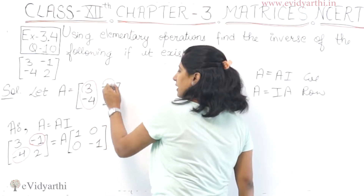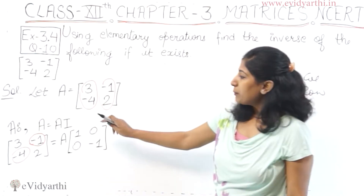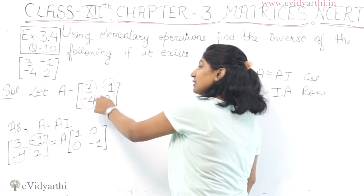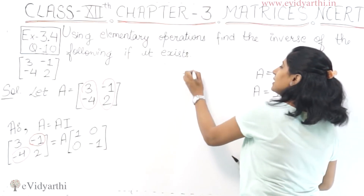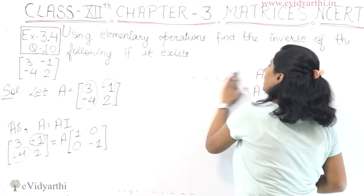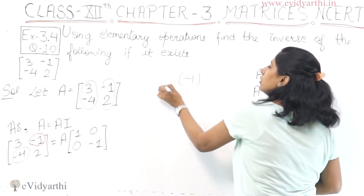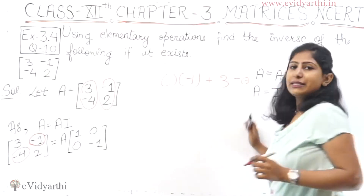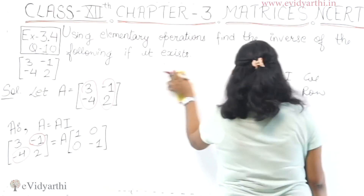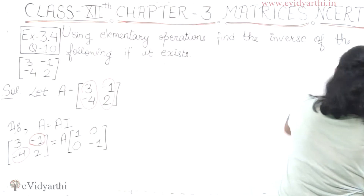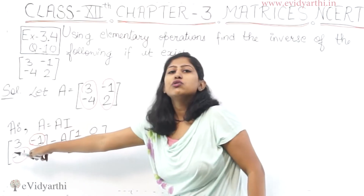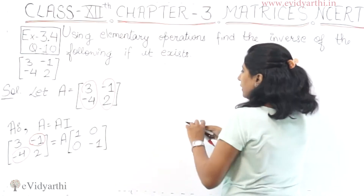So these columns have a relation. If you look at -1 and ask how will it become 0, consider the 3 in column 1. What multiple of 3 added to -1 gives 0? If I multiply column 1 by 1/3 and add it to column 2, then -1 plus 3 times (1/3) gives 0. So our operation on C2 will be C2 plus (1/3) times C1.